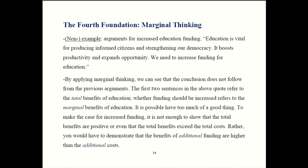This is important for avoiding some errors in analysis. You don't want to conflate total with marginal. Here's an example of sloppy thinking to avoid. You might hear something like: education is vital for producing informed citizens and strengthening our democracy; it boosts productivity and expands opportunity; therefore we need to increase funding for education.